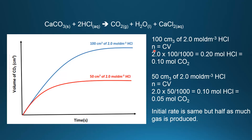For the blue curve, we have 100 cm³ of 2 mol/dm³ HCl. Using N = C × V: concentration is 2 mol/dm³ times volume of 100/1000, giving 0.20 moles of HCl. Looking at the equation, the ratio of HCl to CO2 is 2:1, so dividing by 2 gives 0.10 moles of CO2. For the red curve, using only half the volume, we get 0.05 moles of CO2. So the initial rate is the same because the concentration is the same, but half as much gas is produced by the red curve.